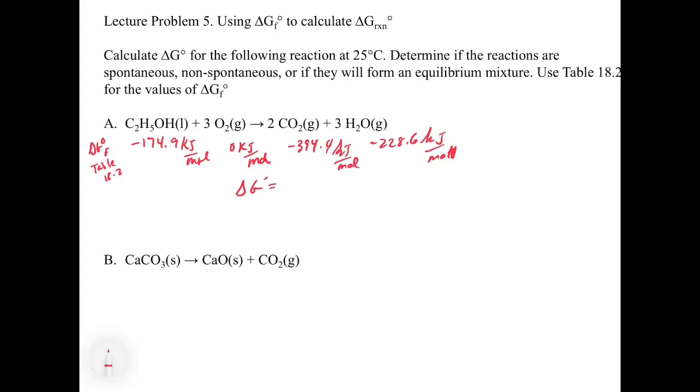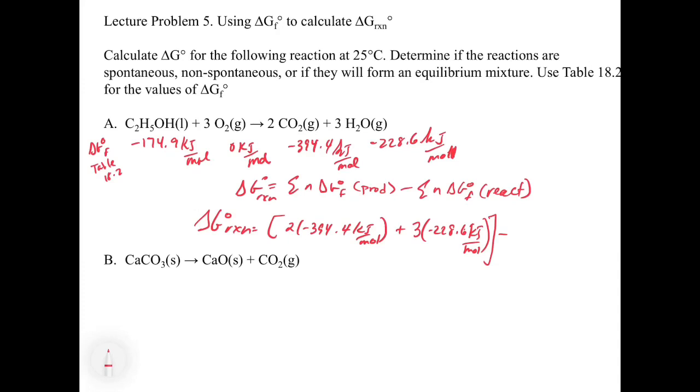Okay. So now that we looked up the values, we're going to use our equation delta G of the reaction is equal to the sum of the number of moles times the delta G not a formation for the products, minus the sum times the number of moles times delta G not a formation for the reactants. So our delta G for the reaction in this case is going to equal, again, I like to use a bracket and then I start looking things up. So we're going to have two times minus 394.4 kilojoules per mole. That's for our carbon dioxide, plus three times minus 228.6 kilojoules per mole. That's for our water. Close bracket. And then we're going to subtract.